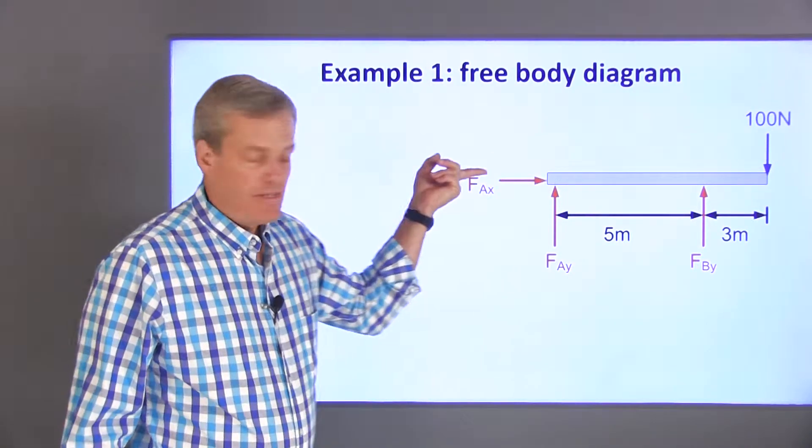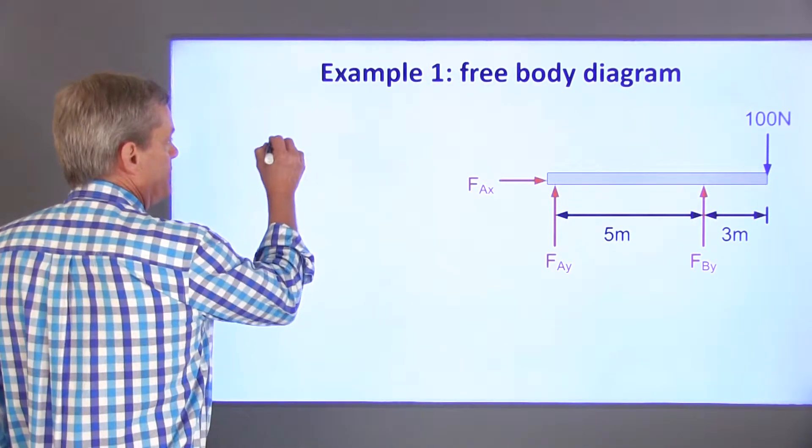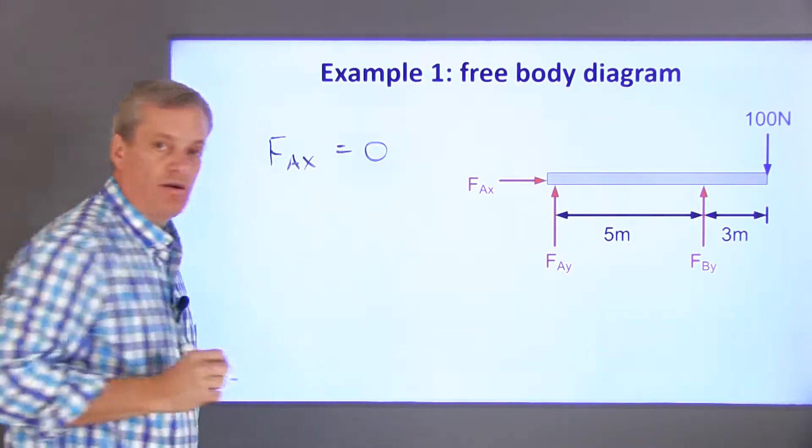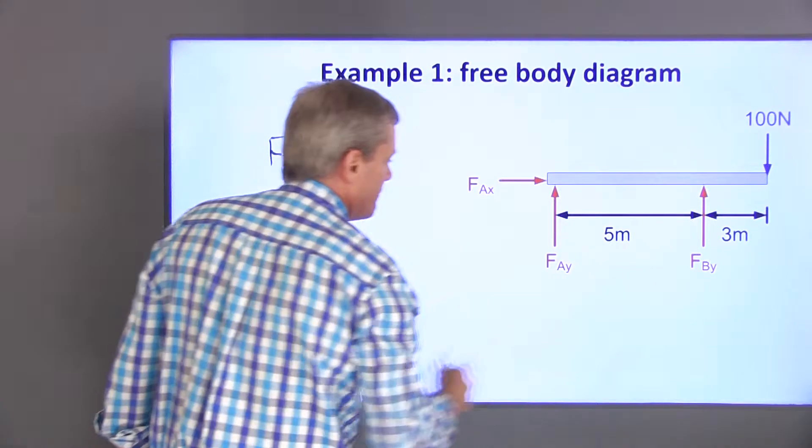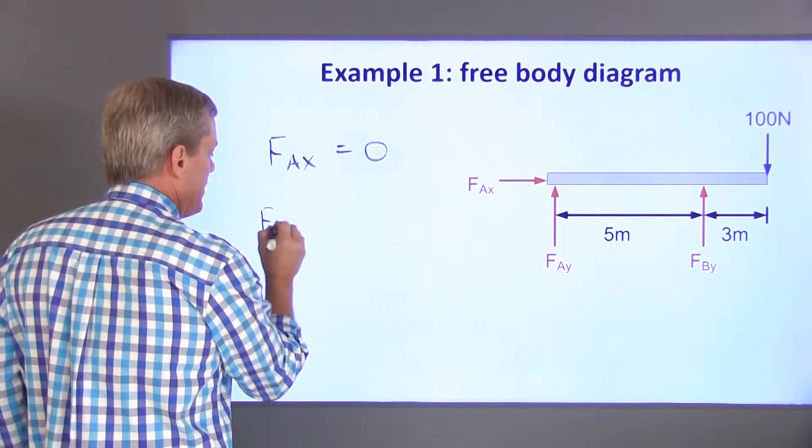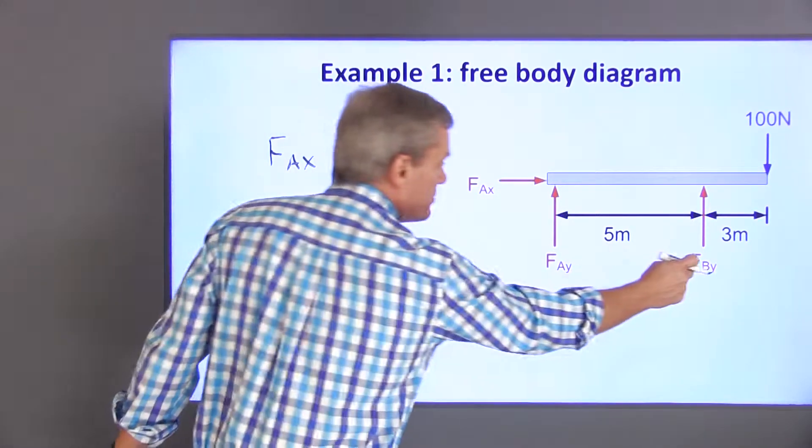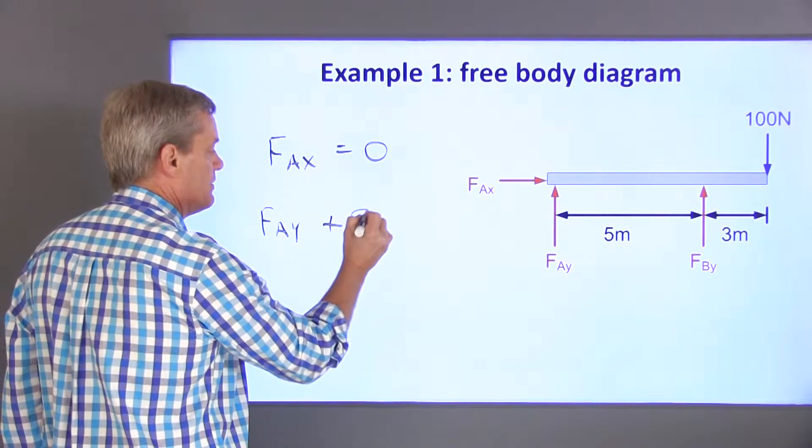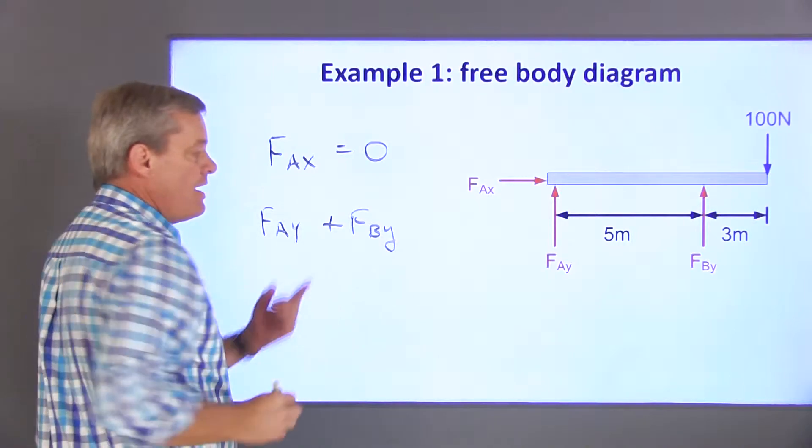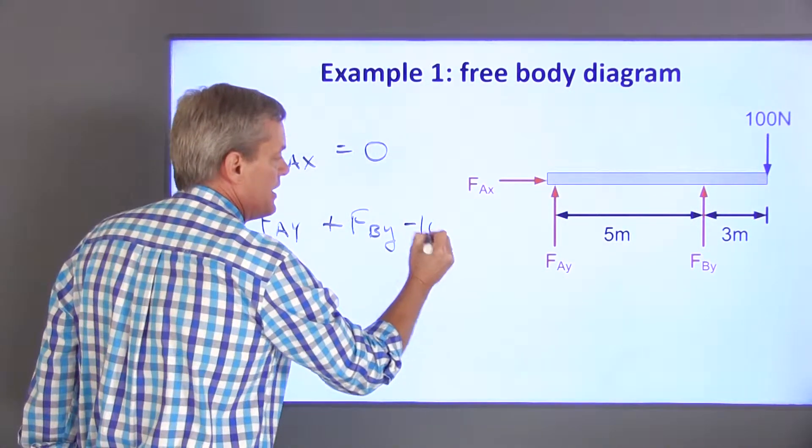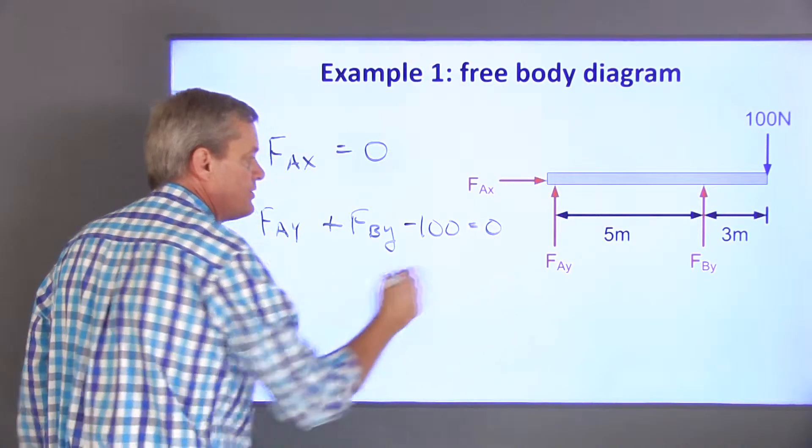So if I sum forces in the x or horizontal direction, the only force in that direction is FAX, so it sums to zero. Sum of the forces in the vertical direction is FBY. I'm going to treat upward forces as being positive, so plus FBY. The 100 newton force is downward, so that gets a negative 100, those also sum to zero.